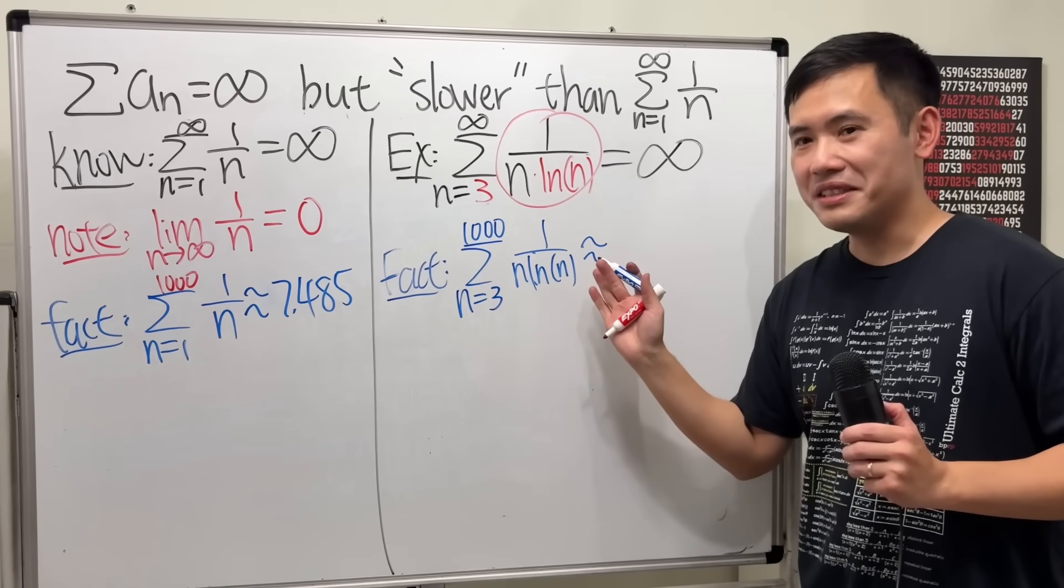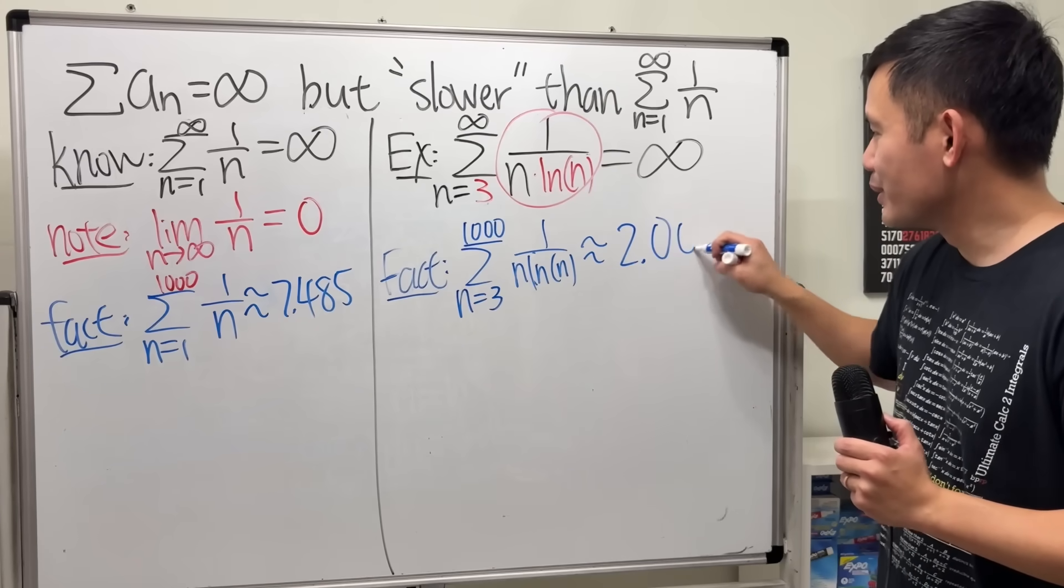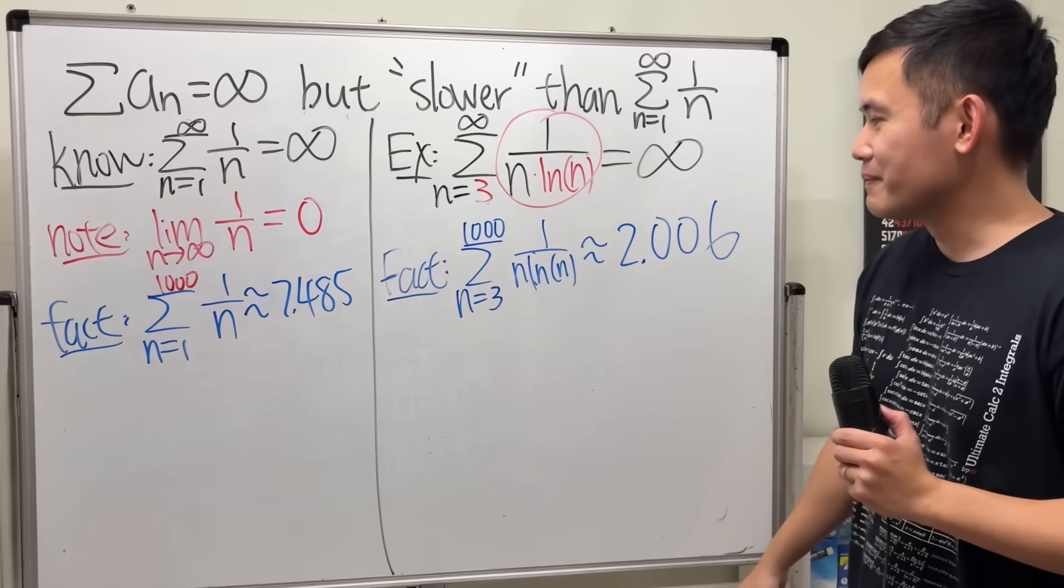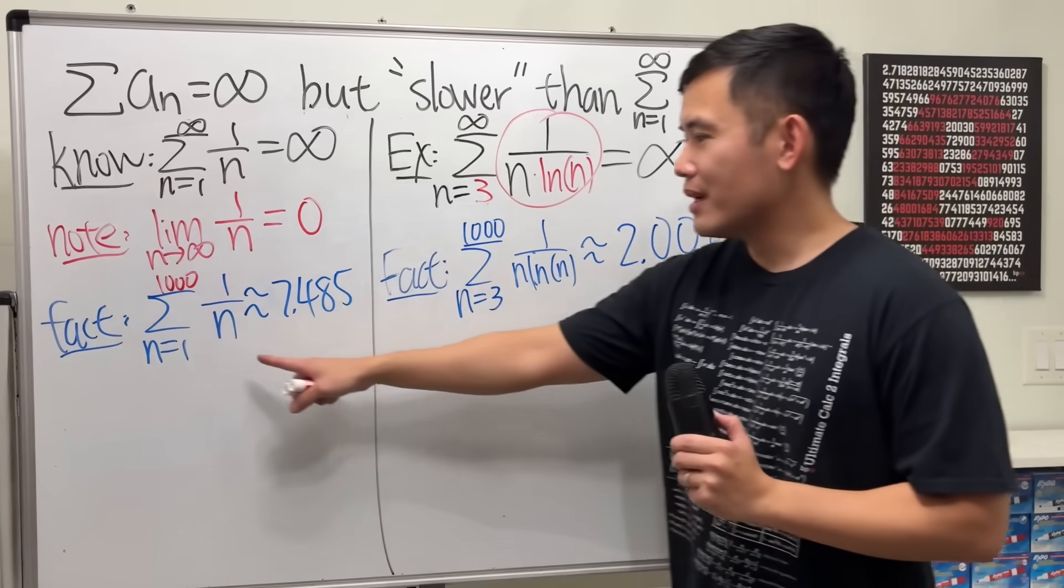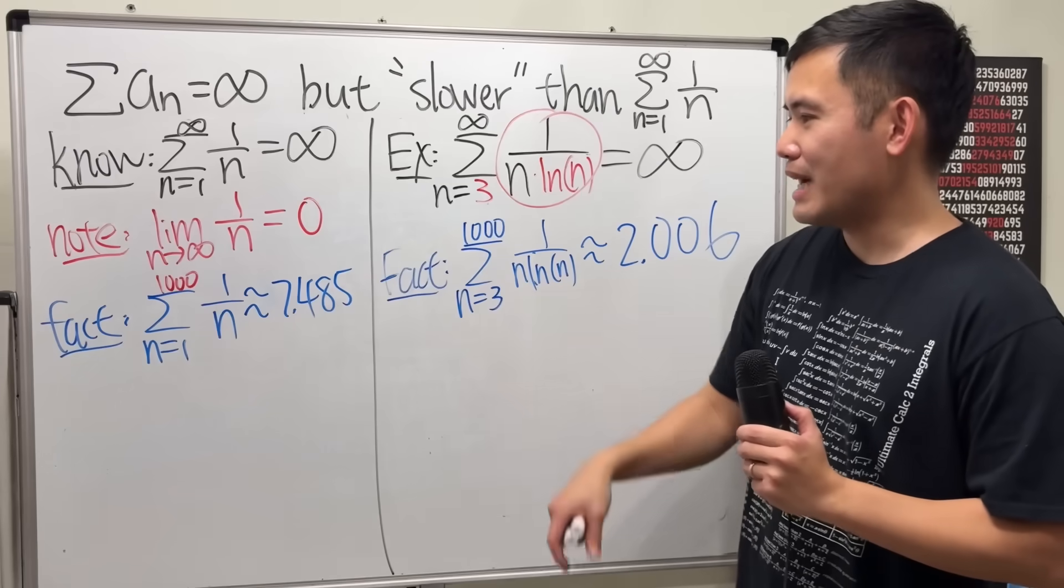the result, take a guess how big this is. This right here is only approximately 2.006. Yes, I wrote down the answer right here so I can see. Yeah, but I know this right here it was from 1 to 1,000, right? So we have to match.